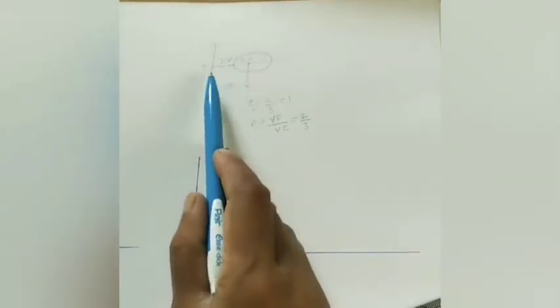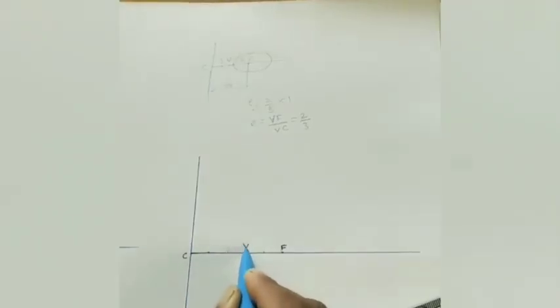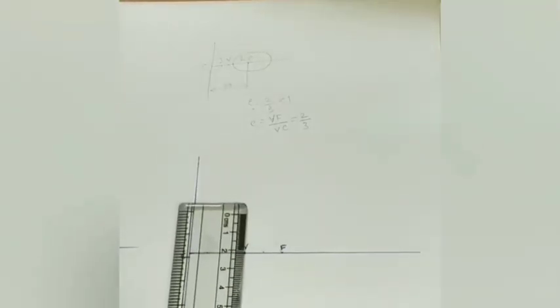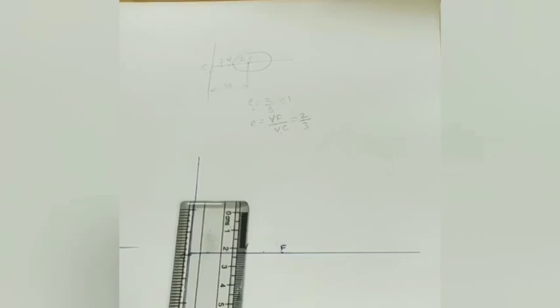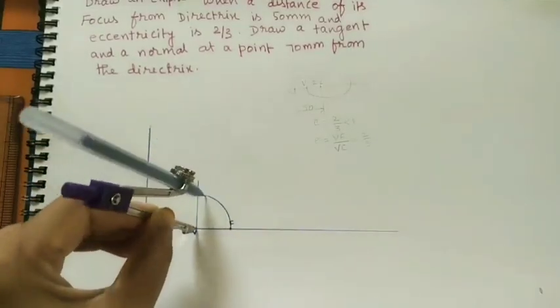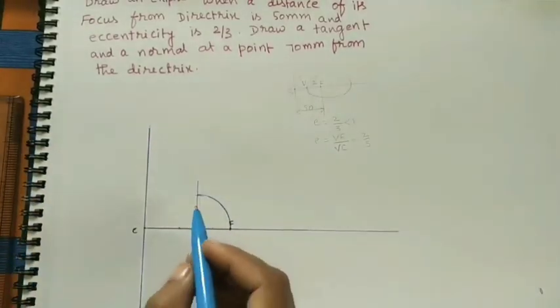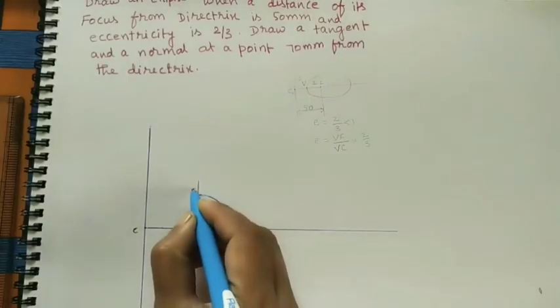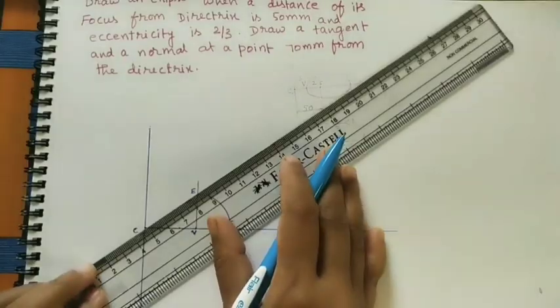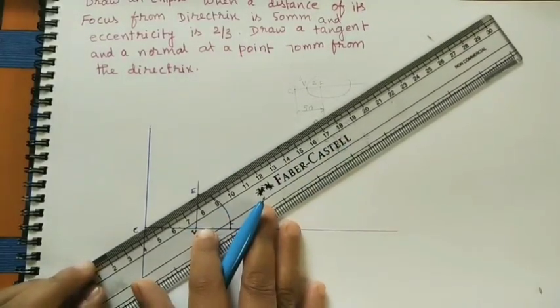Now, CV is 3 parts — so 1, 2, 3 — this point is the V point. And VF is 2 parts — already this is 1 part, this is the second part. After marking V, at V just draw a vertical line of some length. By using compass with V as center and VF as radius, do an arc. This arc touches the vertical line at some point E. Join C and E using the scale — you will get an inclined line.